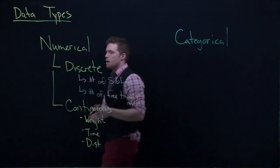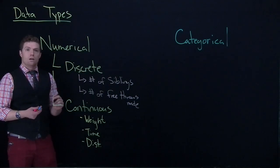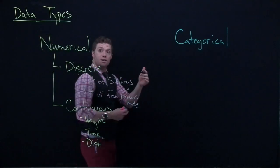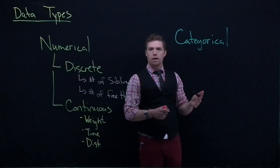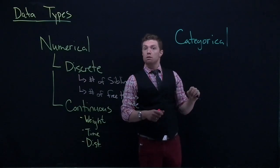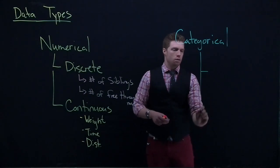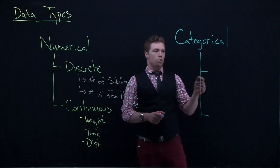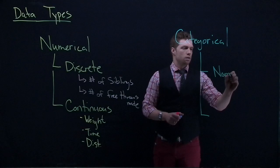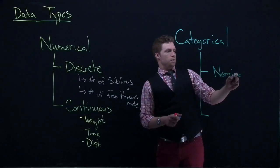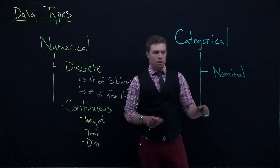The easiest way to think about categorical data is to think about categories. If the response or what we are measuring is a name or category, then we know that we're dealing with categorical data. Within categorical, there are two major groups as well: the first one is nominal, and the second one is ordinal.